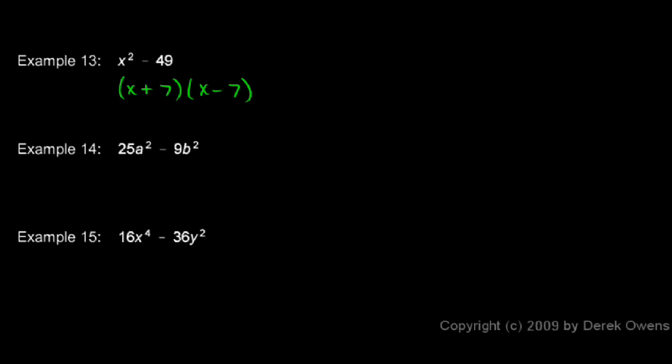Number 14, 25a² minus 9b². Well, each of these terms is something squared. The 25a² is (5a)², and the 9b² is (3b)². So I have one thing squared, and I have another thing squared.